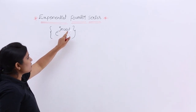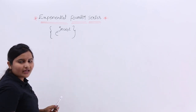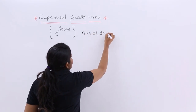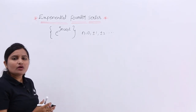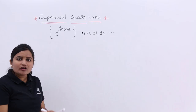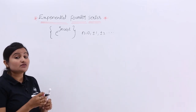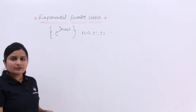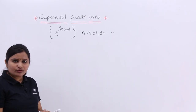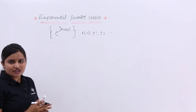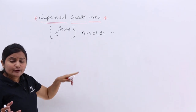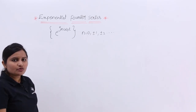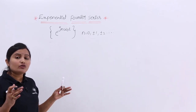The meaning of writing e^(jnω₀t) is that this set includes all values from n = 0, ±1, ±2, and so on. Only then is this set called a complete set. If any one of the exponential signals is missing from this set, it is not said to be a complete set — it is just an exponential set. When all exponentials are included, then only it is called a complete exponential set.